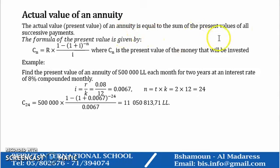The actual value—present value—of an annuity is equal to the sum of the present values of all successive payments. The formula of the present value is given by Cn equals R times (1 - (1 + i)^(-n)) over i, where Cn is the present value of the money that will be invested.